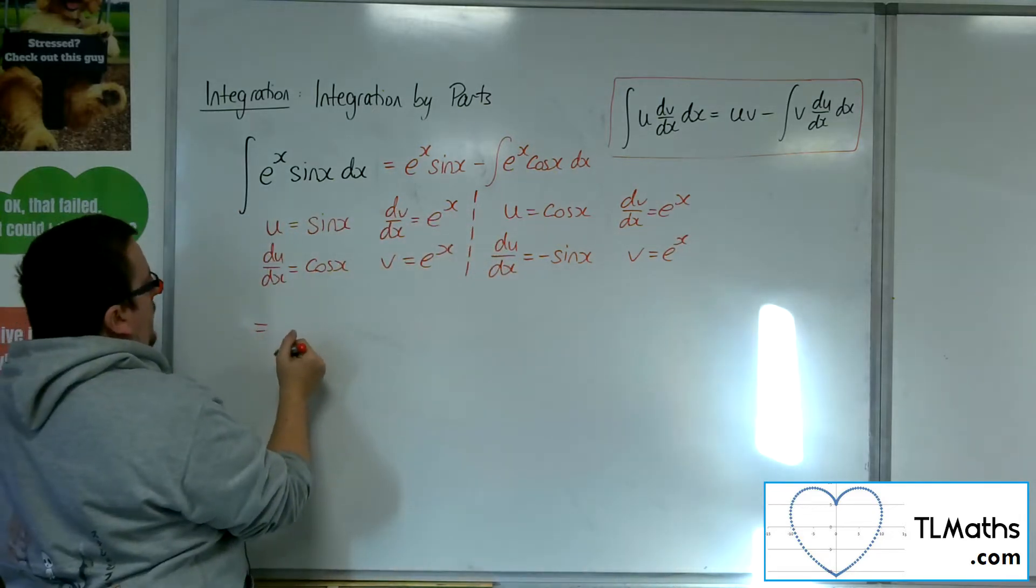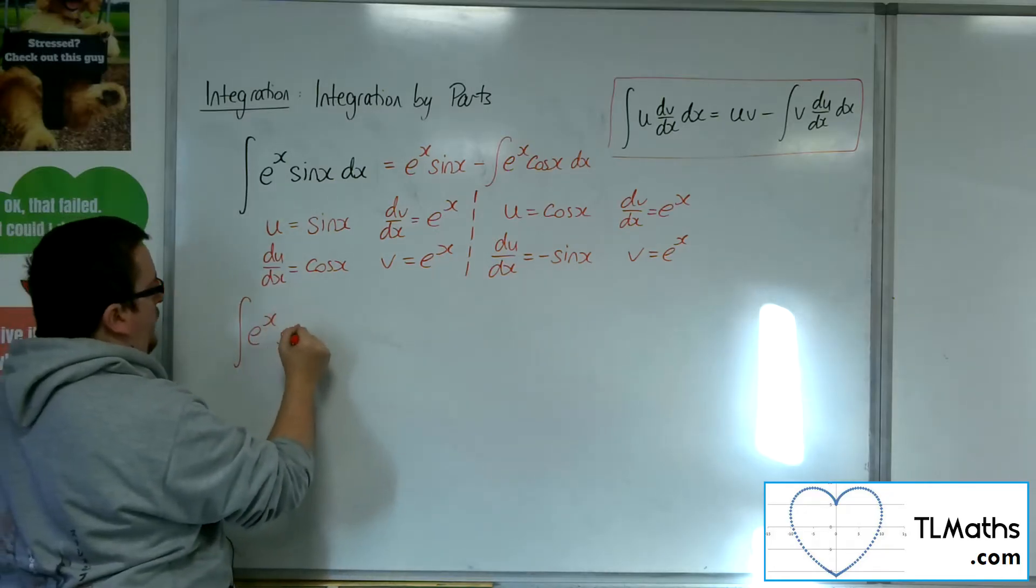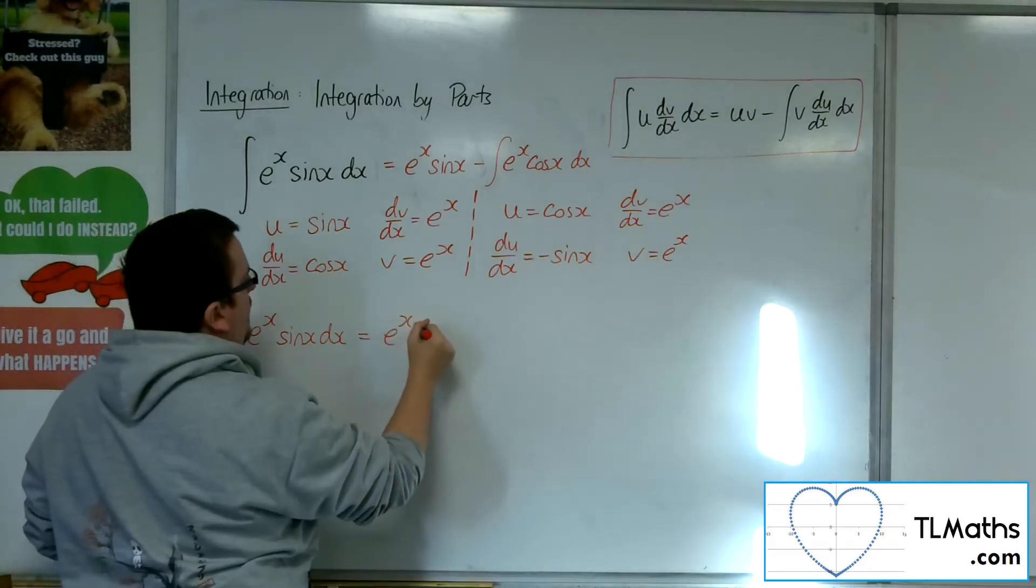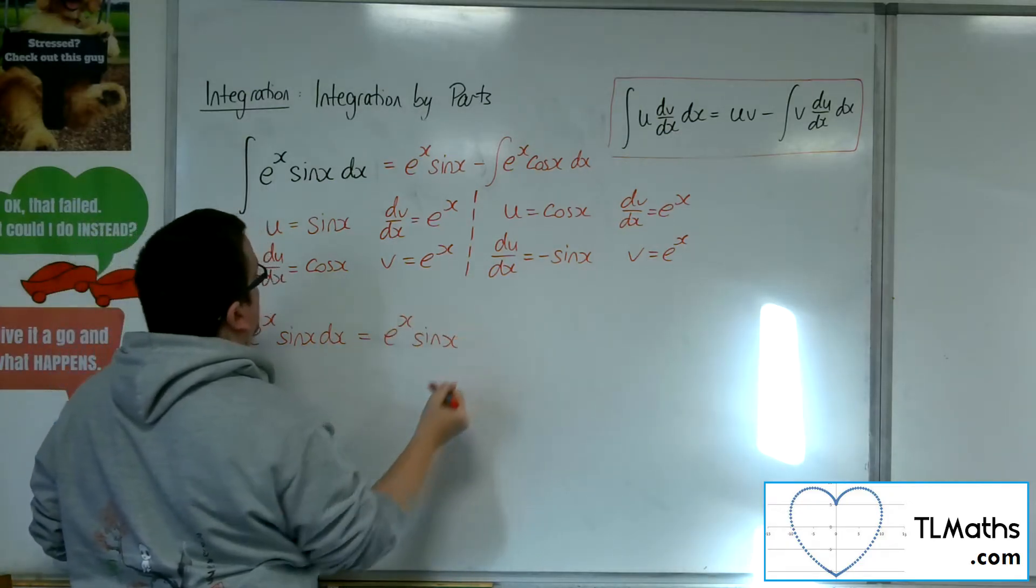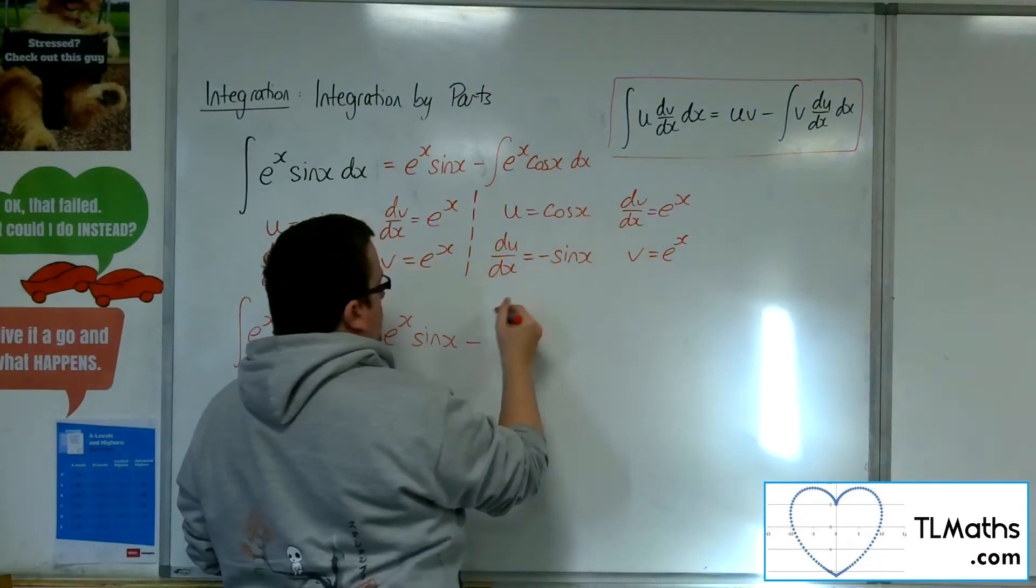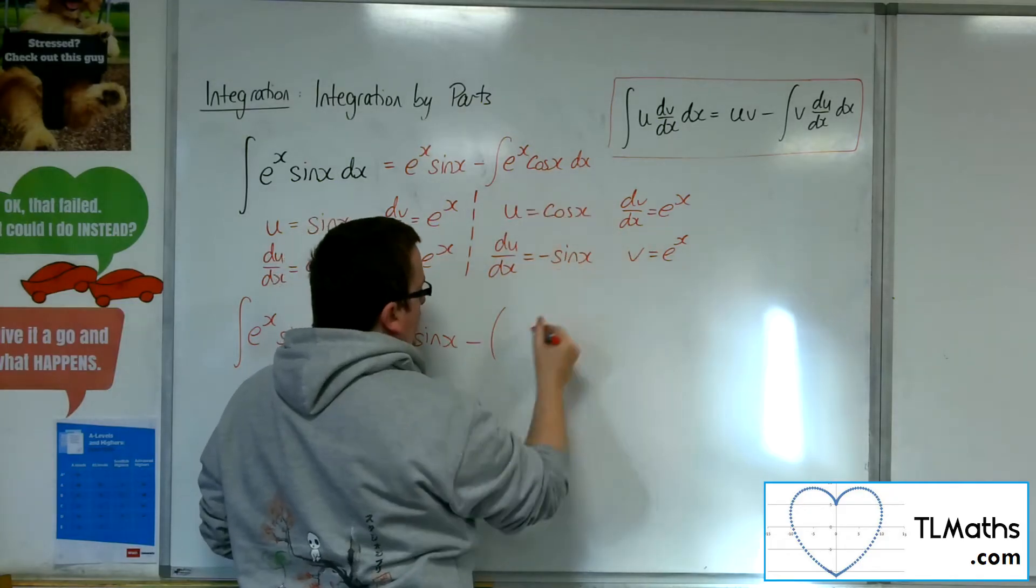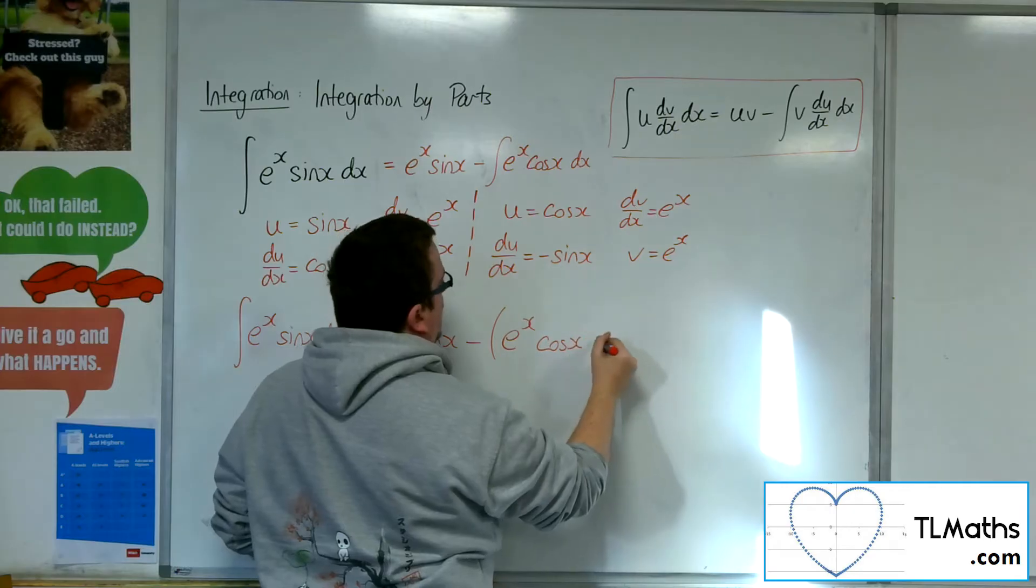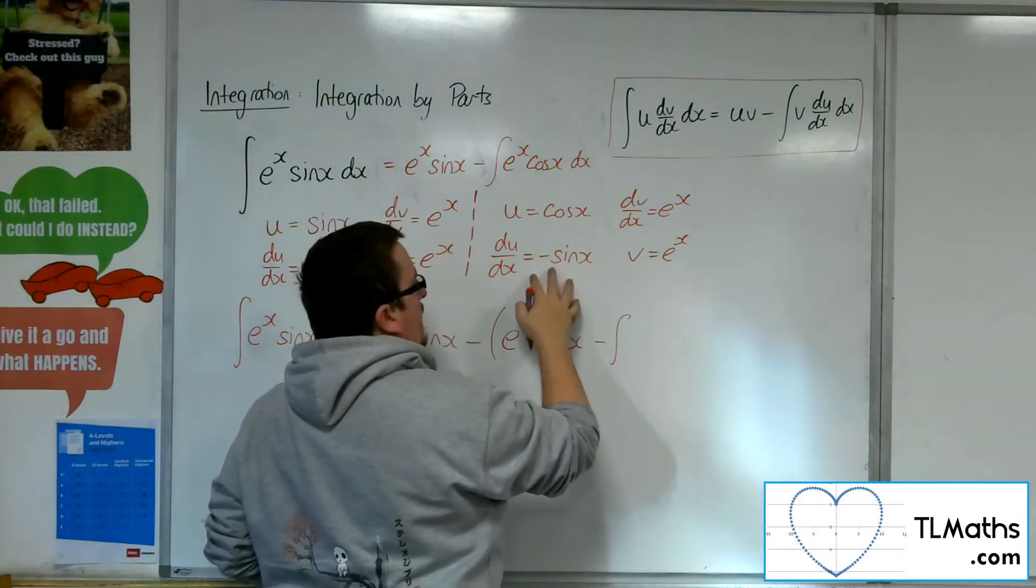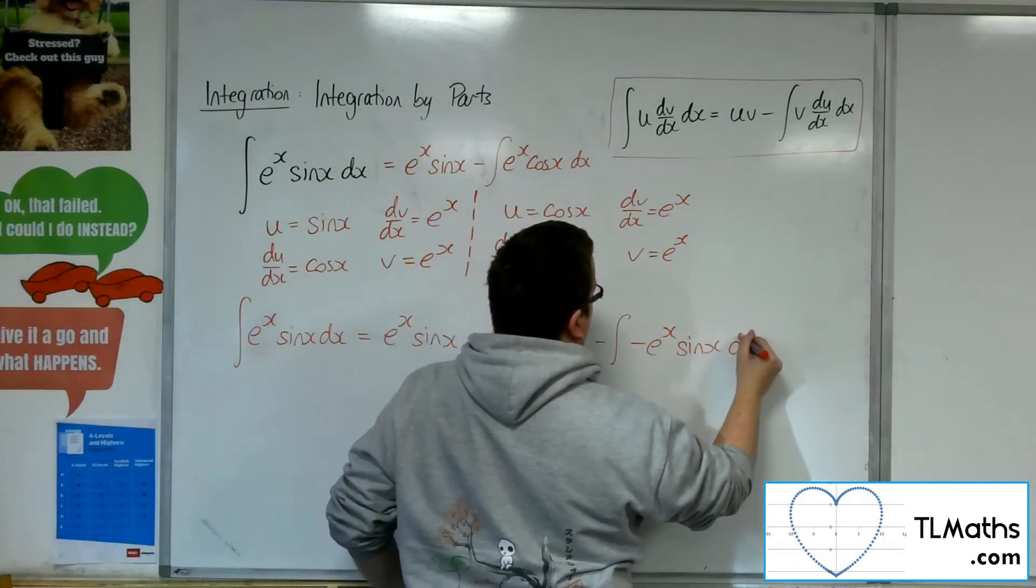So let me just write down this again. I've got e to the x sine x would be equal to e to the x sine x, take away the integral of e to the x cosine x, which is e to the x cosine x, take away the integral of v du by dx. So minus e to the x sine x dx.